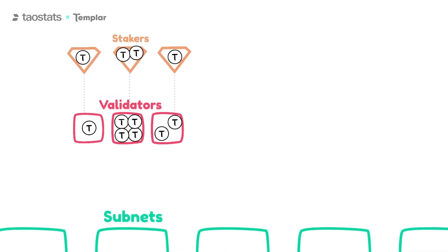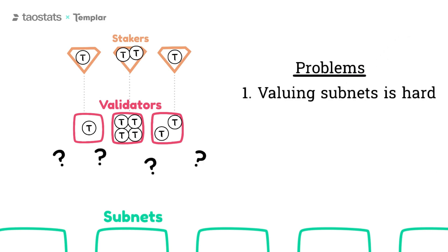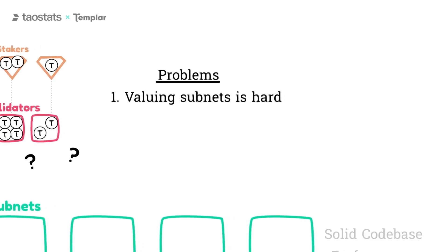As the network has grown, validators have had a very difficult time allocating value to subnets, as there are many aspects to consider.